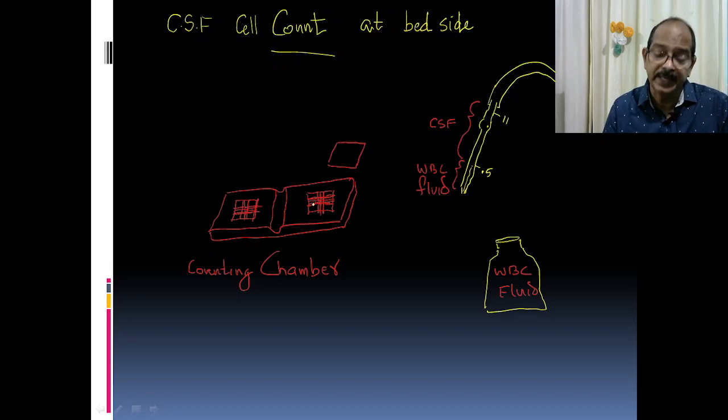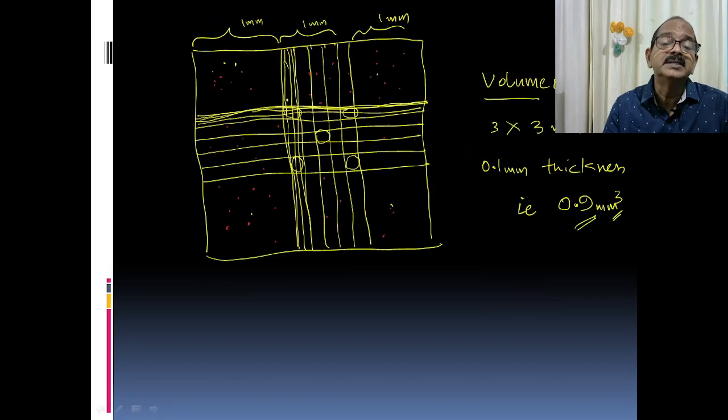This is the marking. The dimensions are 3 mm by 3 mm, giving an area of 9 mm². With 0.1 mm thickness, the volume of CSF over this part is 0.9 mm³. The number of cells counted over this area corresponds to cells per 0.9 mm³.